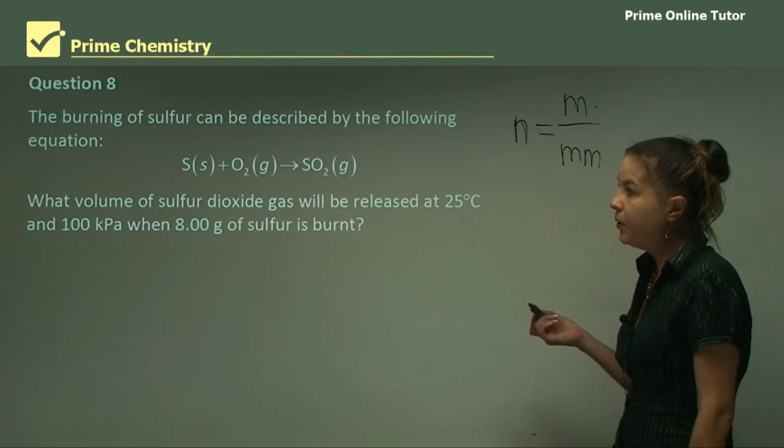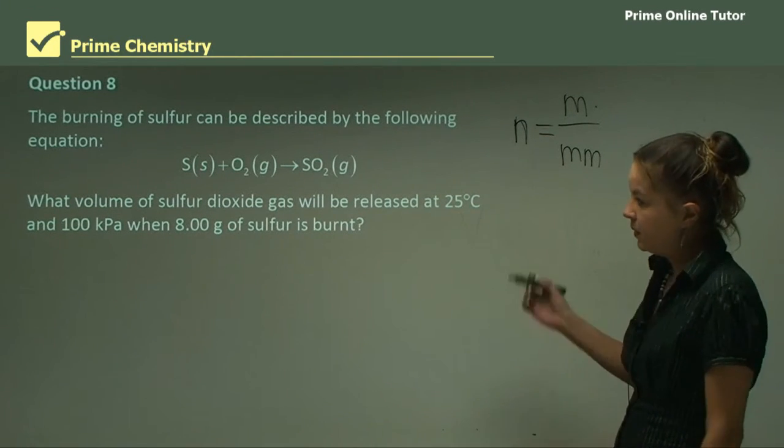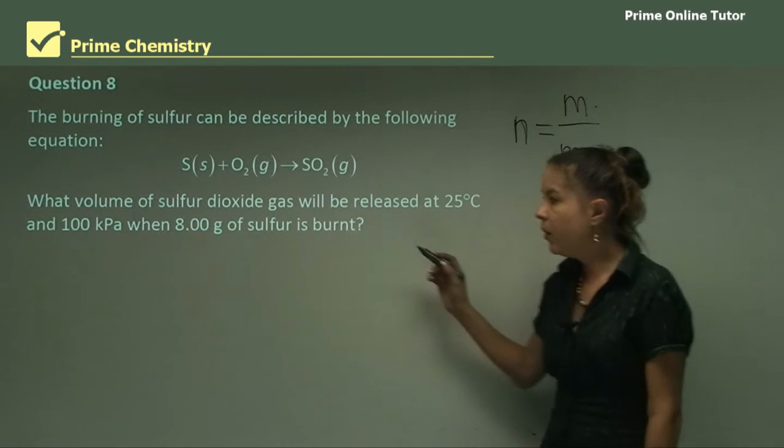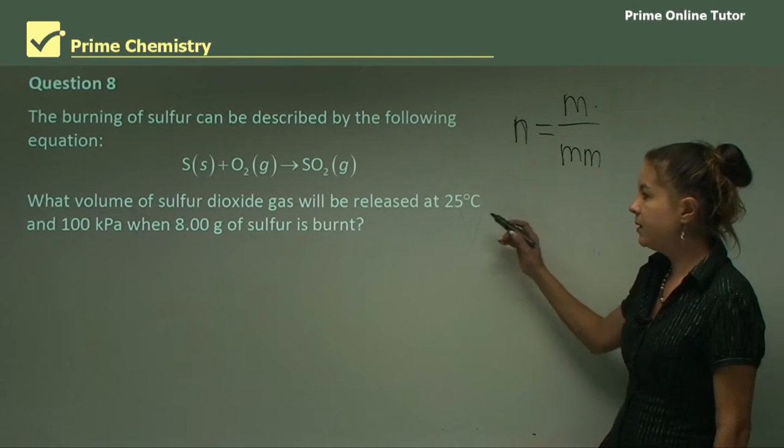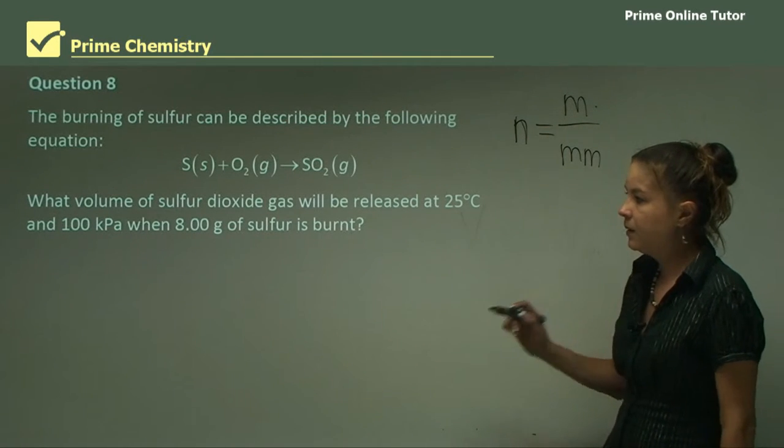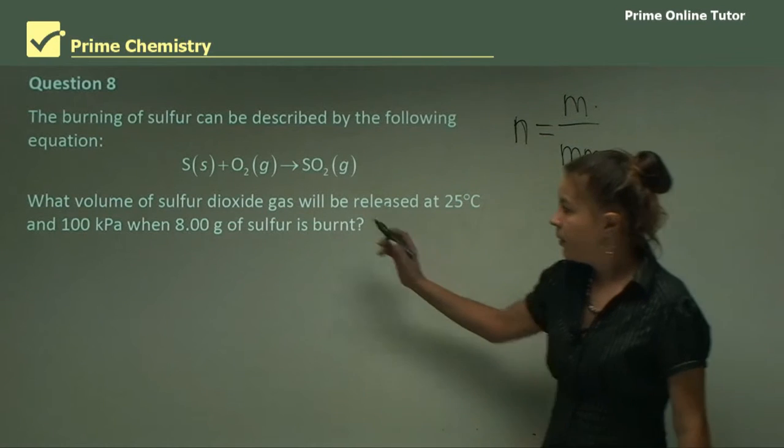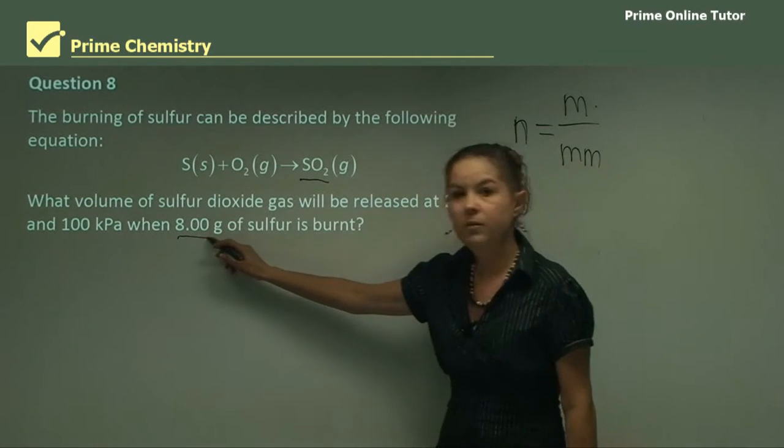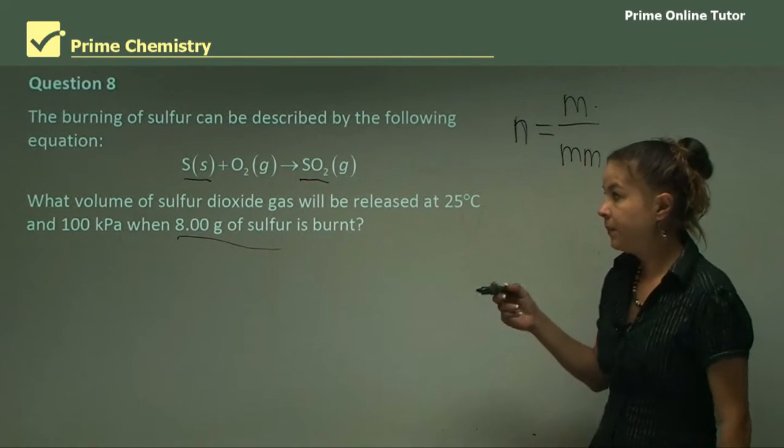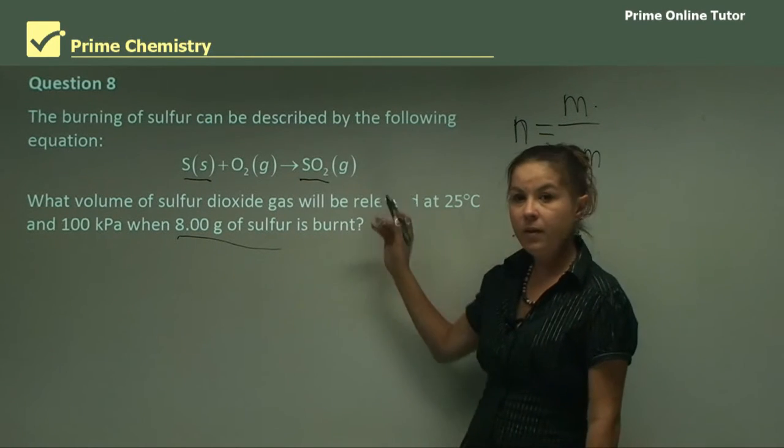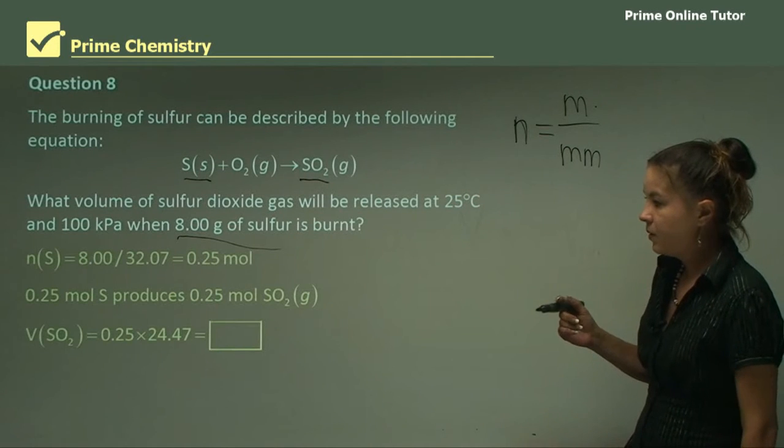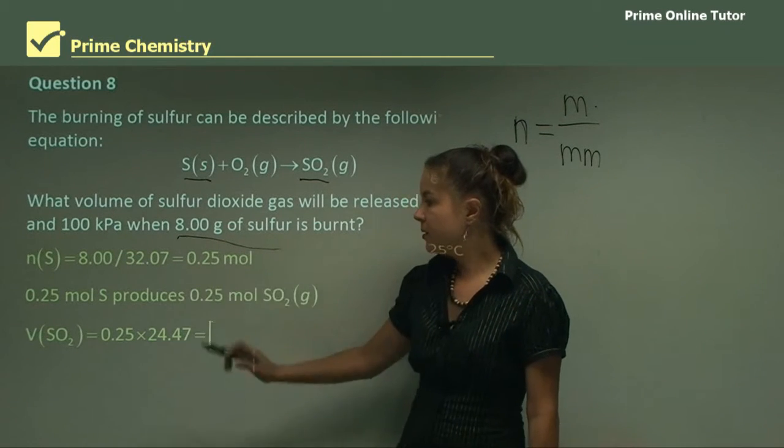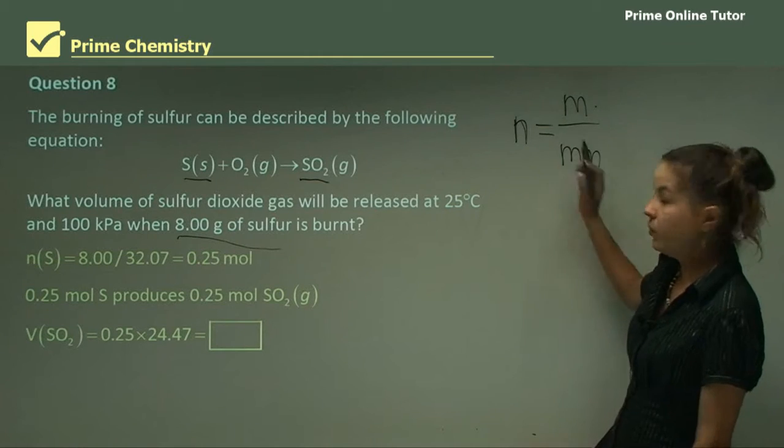Question eight. The burning of sulfur can be described by the following equation: S(s) + O2(g) → SO2(g). What volume of sulfur dioxide gas will be released at 25 degrees and 100 kPa when 8 grams of sulfur is burnt? So it wants us to find SO2, but it's only given us information on sulfur, which is on the other side of the equation. So we have to consider the molar ratio on the left and the right of this reaction. So going through it, the moles of sulfur we can work out. It's 8 divided by its molar mass, which is 0.25 mole.